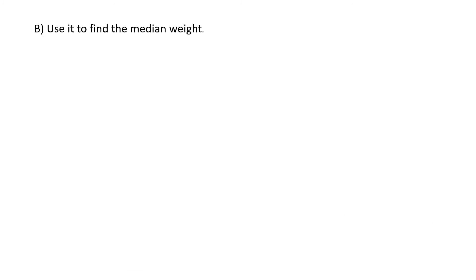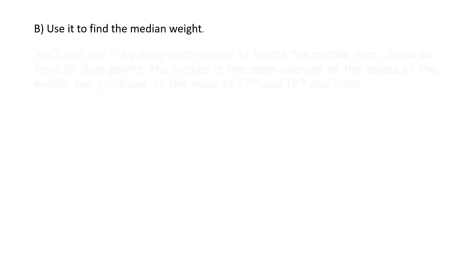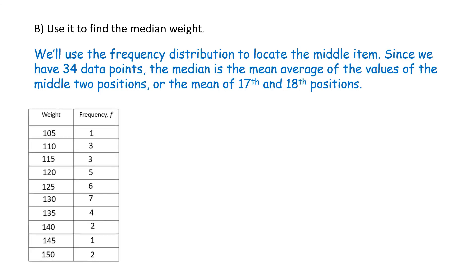Part B. Use it, meaning the frequency distribution, to find the median weight. We'll use the frequency distribution to locate the middle item. Again, since we have 34 data points, the median is the mean average of the values of the middle two positions, or the mean of the 17th and 18th positions. What would that look like? Well, let's begin.